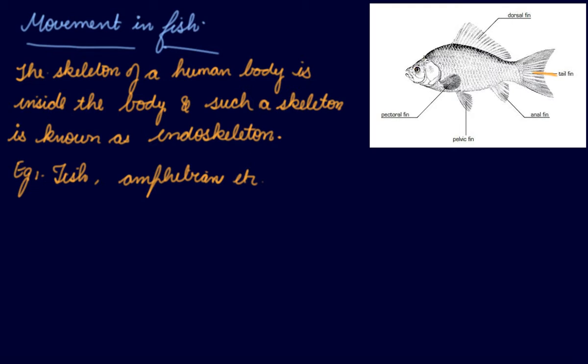The fish has a streamlined shape. Similarly, boats, aeroplanes, and ships also have a streamlined shape. This streamlined shape helps movement in water — it is wide at the front and narrow at the back.